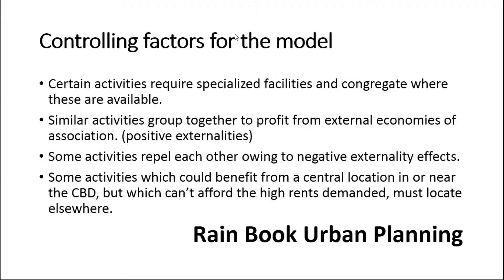The third factor is that some activities repel each other, creating negative externalities effects, as seen in the separation of high-income residents from industry. For example, middle-class and high-class residential areas should not be adjacent to industrial areas. This phenomenon is called space segregation in urban planning, where we usually separate these incompatible functions apart.